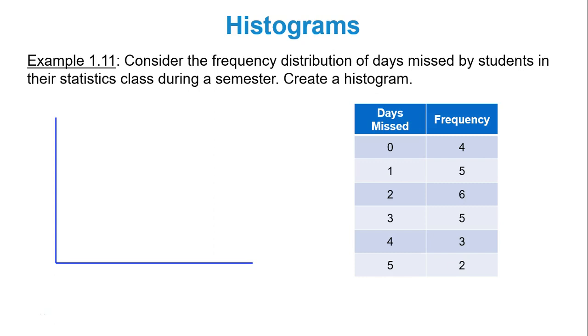Consider the frequency distribution of days missed by students in their statistics class during a semester. Create a histogram. So I have a title. I'm just going to call this days missed. And I only have six different data values, so there's no need to have classes. In other words, I can label my x-axis from 0 to 6. There's no need to have classes when you only have six data values. So number of days, that's my x-axis. And then frequency. Frequency goes as high as 6, so I'll go all the way up to 6 for my frequency labeling on my y-axis, 1 all the way up to 6.